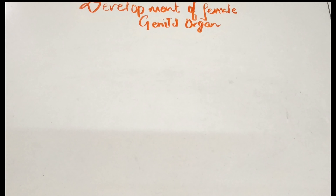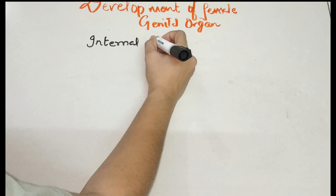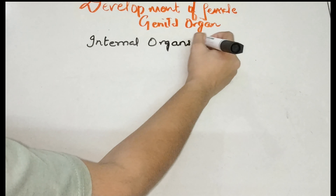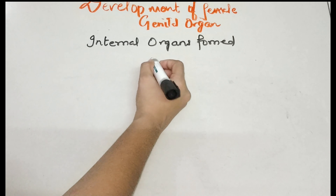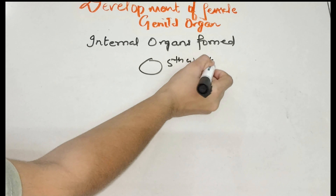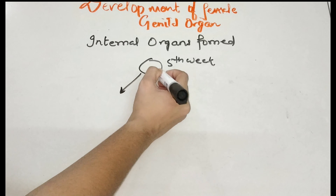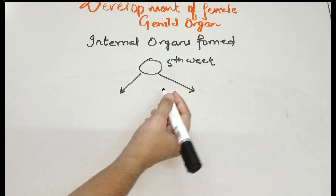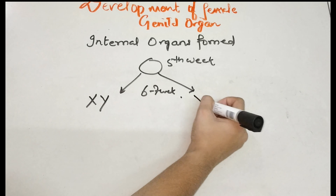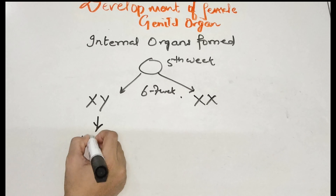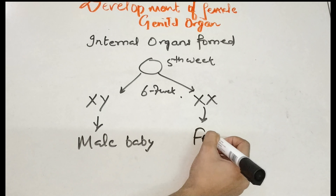At the 5th week, the product of conception begins identifying its chromosomes. By 6 to 7 weeks, if we look at the chromosomes: if the sex chromosome is XY, the baby is going to be male; if it is XX, the baby is going to be female.